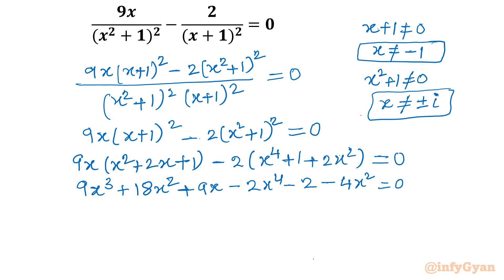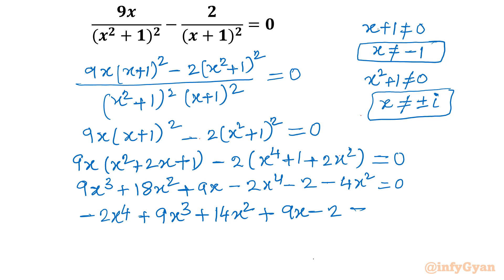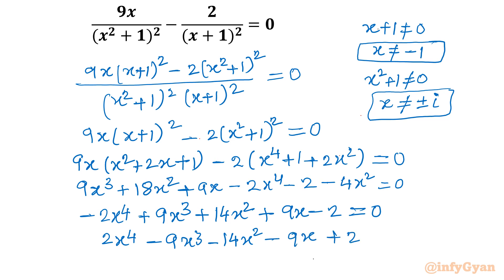Now let us write in descending order form. So: minus 2x⁴ plus 9x³ plus 18x² minus 4x², giving 14x², plus 9x minus 2 equal to 0. I will multiply both sides by negative 1, so it becomes: 2x⁴ minus 9x³ minus 14x² minus 9x plus 2 equal to 0.